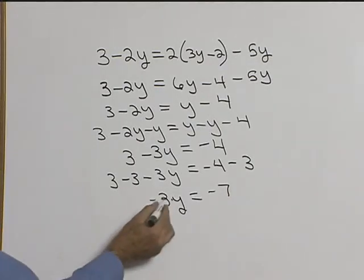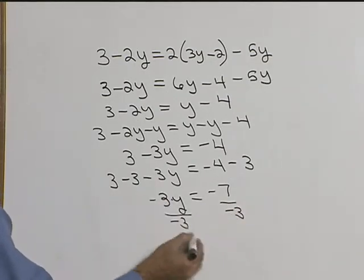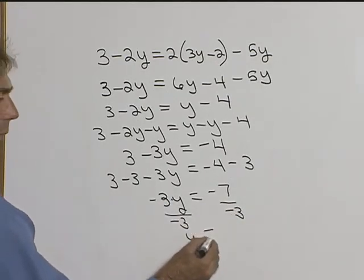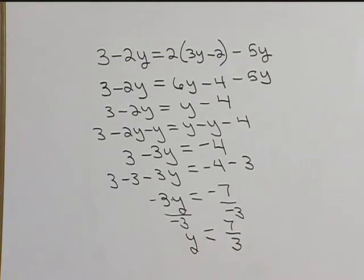Now how do we get rid of negative 3y? Well it's being multiplied here so we'll divide both sides by negative 3. Our negative 3's drop out and two negatives make a positive, so y equals 7 thirds.